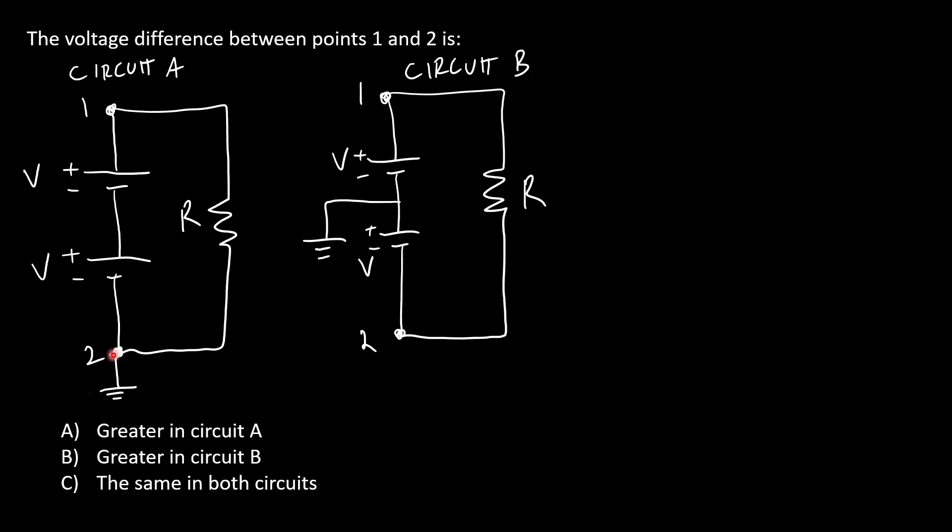The only difference between the two circuits is where I have defined ground. In circuit A, ground is defined at point 2. In circuit B, ground is defined at the point between the two batteries.